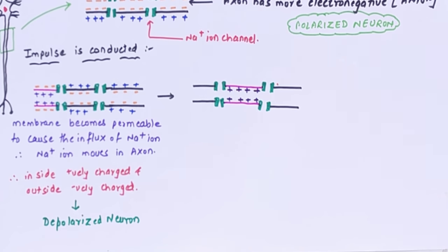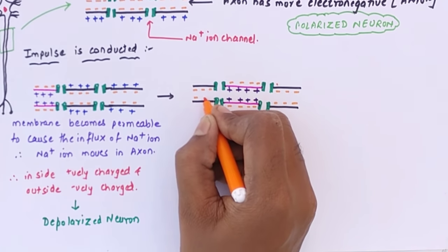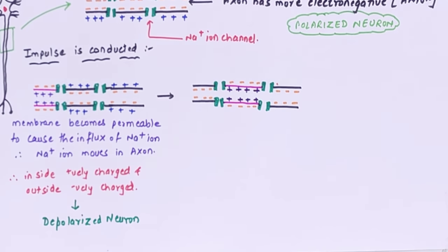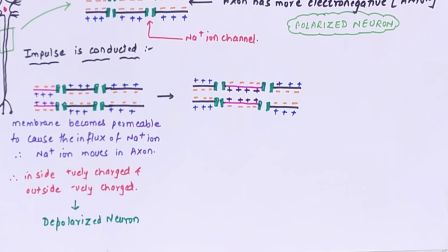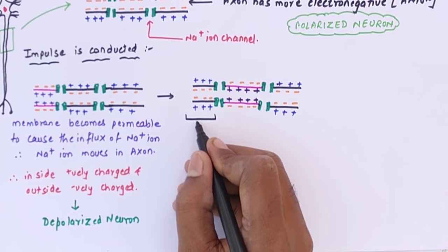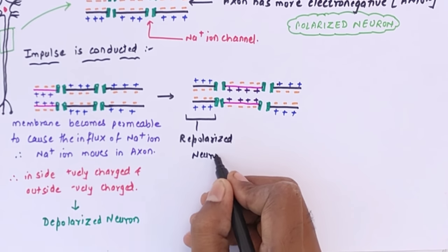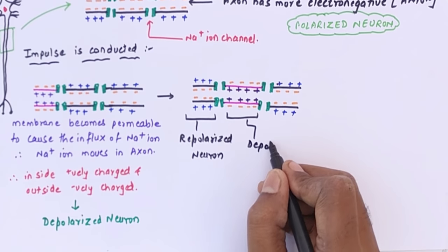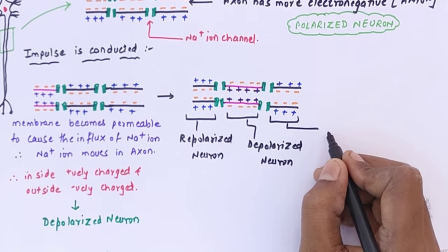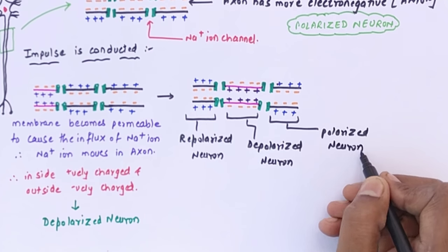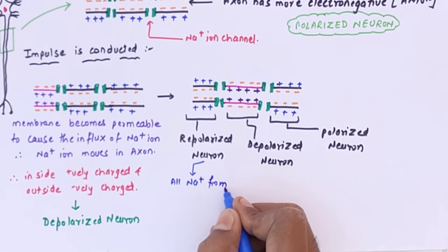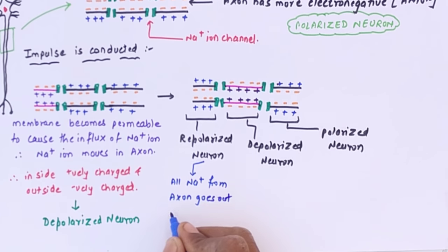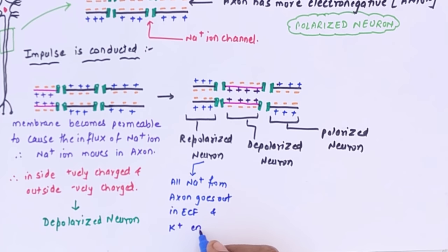As the impulse moves to the center section, the pink area now represents the impulse in the middle. The previous section becomes repolarized, the middle section is depolarized, and the last section remains polarized. As the impulse travels further, Na+ starts moving inside from outside in the polarized section, meaning depolarization of the polarized neuron takes place. This is how the stimulus keeps traveling till the end of the axon or axonic knob.